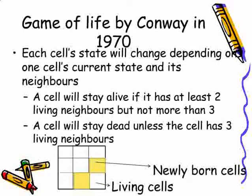Game of Life is a cellular automaton. Imagine an infinite square grid in which each cell exists in either a living or dead state. When the clock ticks, each cell's state will change depending on the cell's current state and its neighbors.